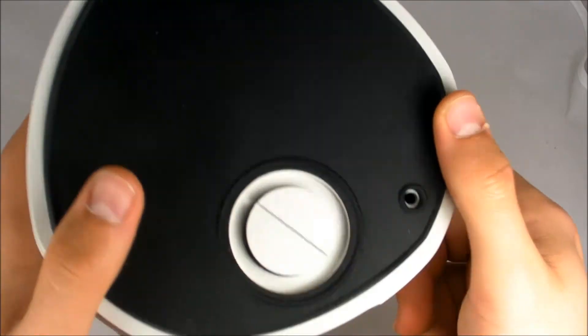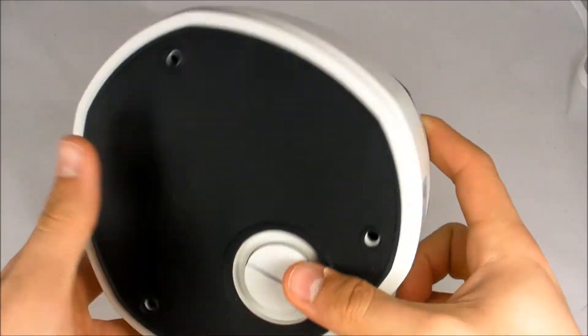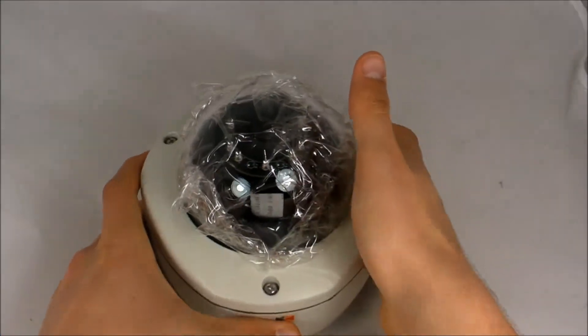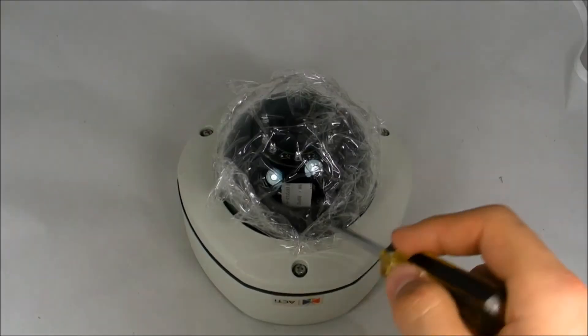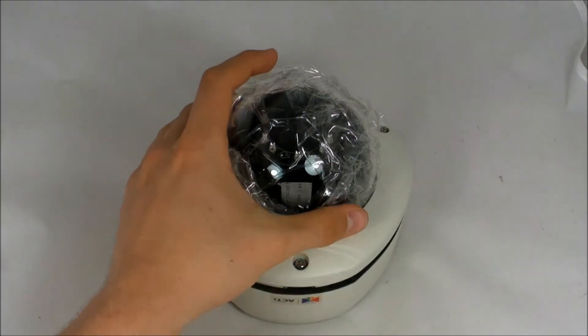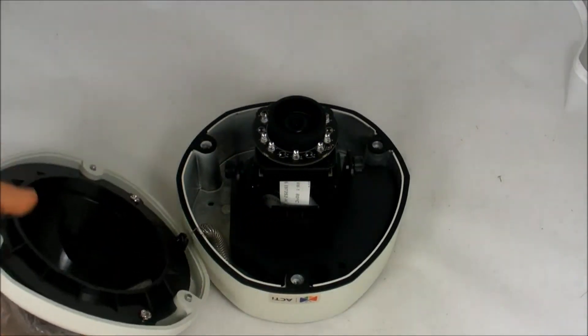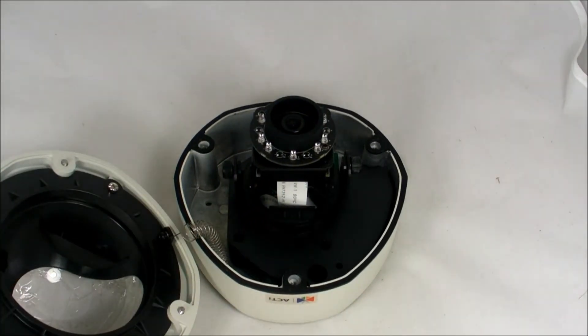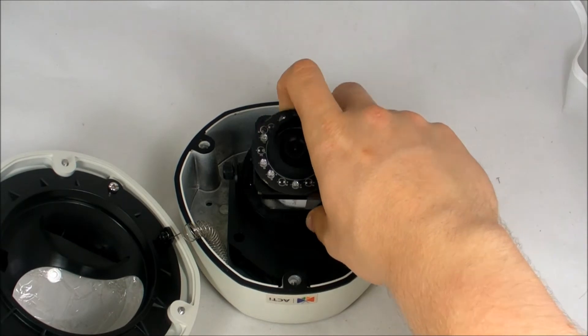This camera has a mechanical IR cut filter and can see a minimum illumination of 0 lux up to 15m. The casing of this camera is IK10 rated vandal proof and IP66 weather proof. It also has onboard storage options via an SD card slot and uses power over ethernet.